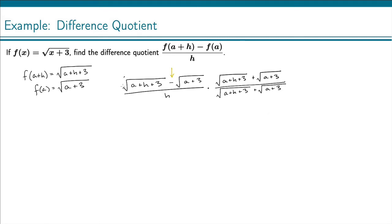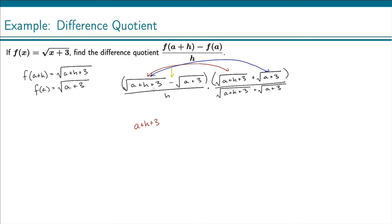Now we're going to multiply. There are two terms on each side, so we're just distributing — this is FOIL. We take the square root of a plus h plus 3 and multiply it by itself, which gets rid of the square root, giving us a plus h plus 3. Next, we take the square root of a plus h plus 3 and multiply it by the square root of a plus 3. Those are different square roots, so they don't cancel — we just leave them as a product.